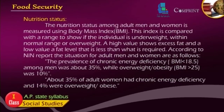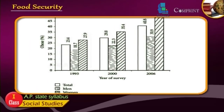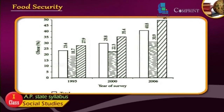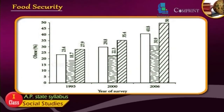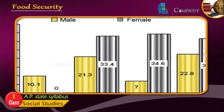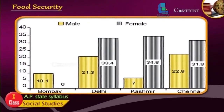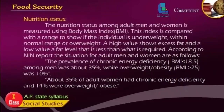The nutrition status among adult men and women is measured using Body Mass Index (BMI). The index is compared with a range to show if the individual is underweight, within the normal range, or overweight. According to the NIN report, the prevalence of chronic energy deficiency (BMI less than 18.5) among men was about 35%, while overweight/obesity (BMI more than 25) was 10%. About 35% of adult women had chronic energy deficiency and 14% were overweight or obese.